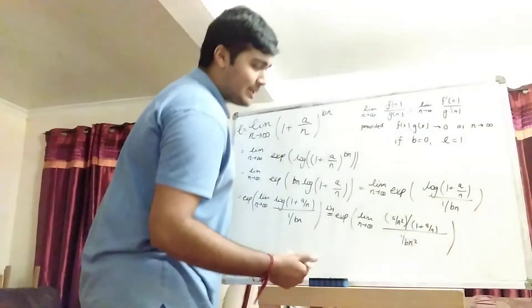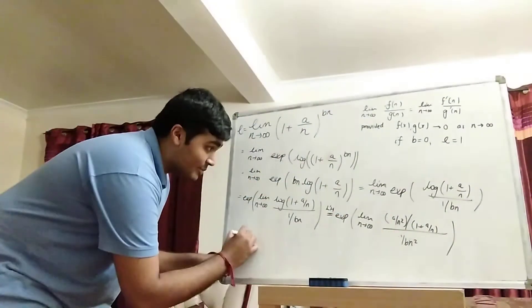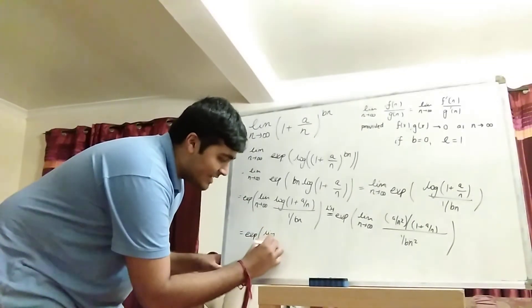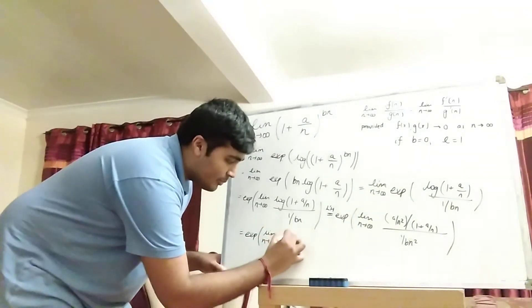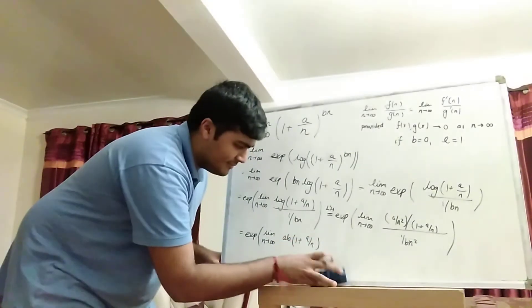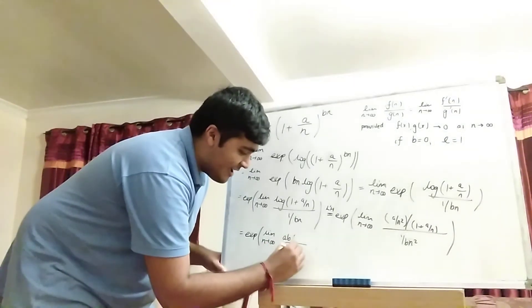Cool, loads of things are now going to cancel out. The minus and the minus will cancel. And then the 1 over n squared will cancel. And then I can bring this 1 over b to the top. So we're left with the exponential of the limit as n goes to infinity. On the top, we have ab times 1 plus a over n. Oh, sorry. Divided by 1 plus a over n.